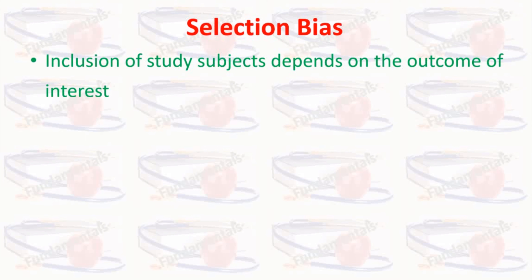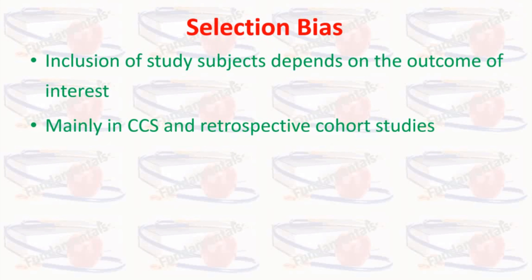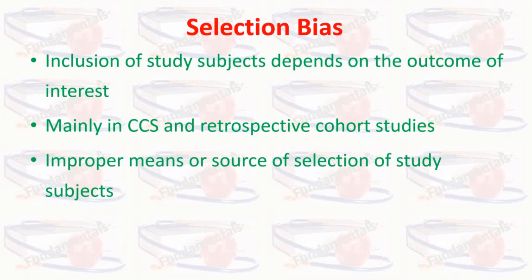Selection bias occurs when the inclusion of subjects in a study depends in some way on the outcome of interest. It occurs mainly in case-control studies and with retrospective cohort studies, but in prospective cohort studies, selection bias does not occur because the outcome of interest has not yet occurred. Selection bias can occur due to improper means of selection of the study subjects.